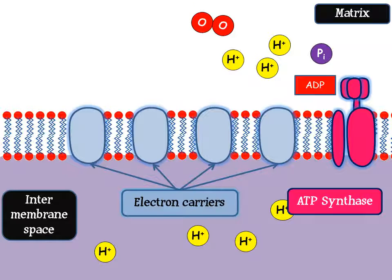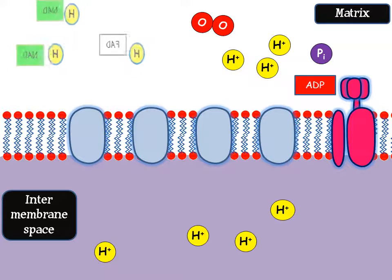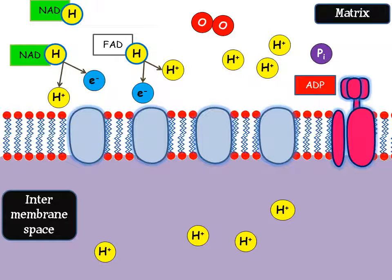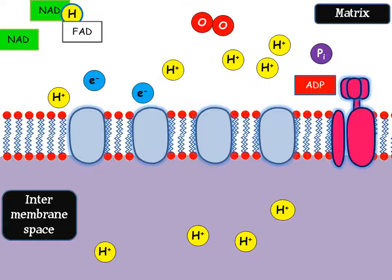So how does it all work? The reduced NAD and FAD arrive bringing their hydrogens from the earlier stages of aerobic respiration. They drop off their hydrogen atoms, which split into hydrogen ions and electrons. The NAD and FAD, which are now oxidised, will return to the earlier stages of aerobic respiration.